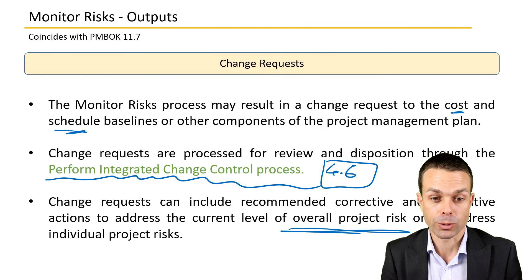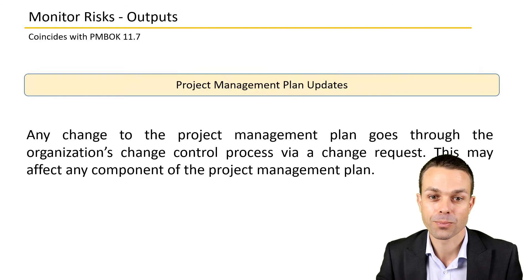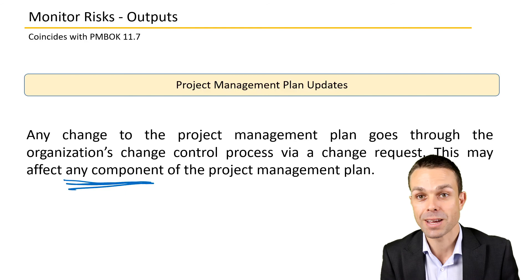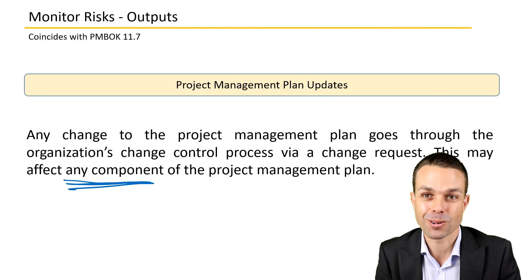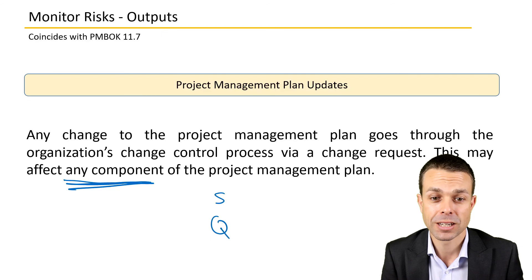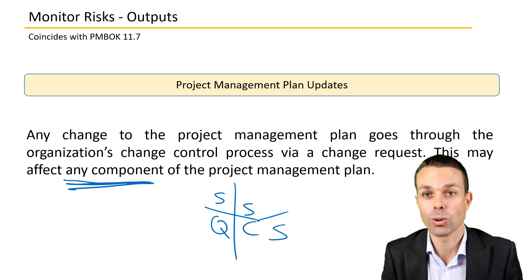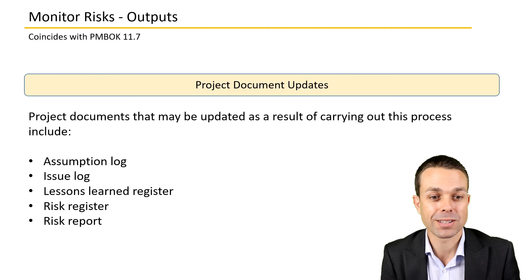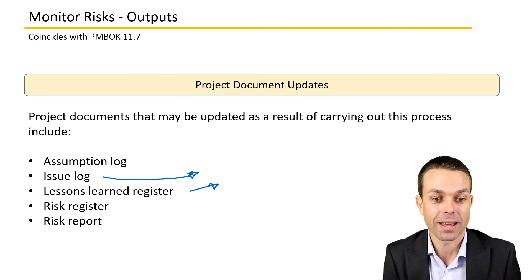Any change will affect our schedule, cost, or scope. Project management plan updates — any component of the project management plan could be updated. It's also a baseline document and will need to go through the change request process. Scope, quality, schedule, cost — all of these things might change, and stakeholders might change as well. Project document updates we'll see are our issue log if we have any issues to raise, lessons learned, the risk register if we're adjusting or adding any risks, and our risk report so that we can send the most up-to-date information on our risks out to our project stakeholders.